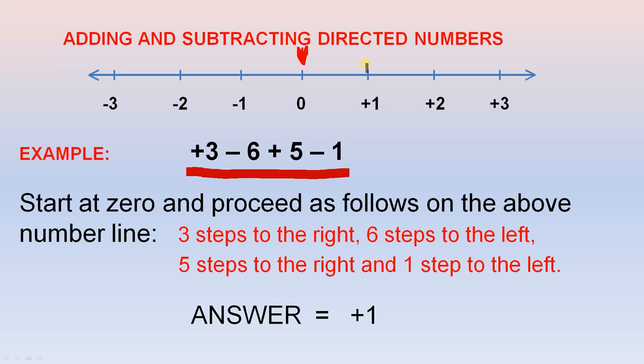The positive three tells you that you proceed three steps to the right: one, two, three. So we are here. The negative six tells you that we proceed six steps to the left: one, two, three, four, five, six. So we are here.